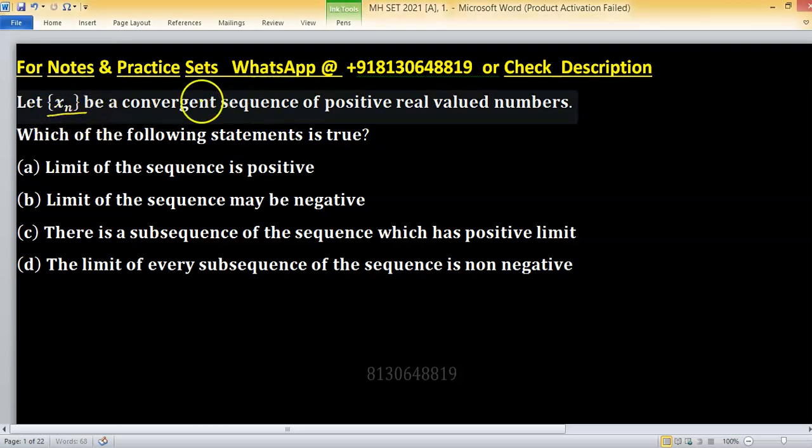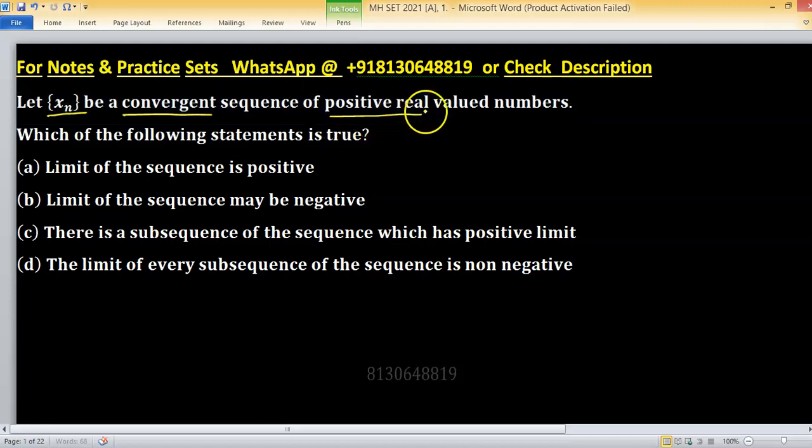Let xn be a convergent sequence of positive real numbers. Which of the following statement is true? Consider xn as 1 upon n. This is a sequence of positive real numbers as well as it is convergent. This particular example helps you to eliminate options.